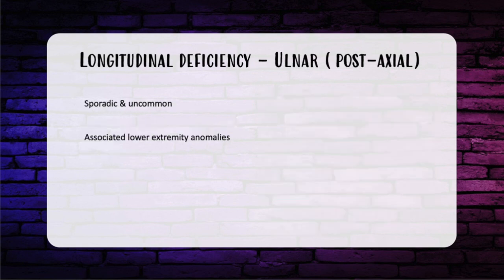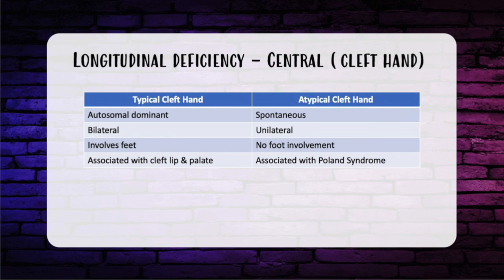Another type of longitudinal deficiency is ulnar deficiency, aka post-axial. This is sporadic and uncommon and is commonly seen with lower extremity anomalies. There's also central longitudinal deficiency, which results in a cleft hand. There are usually absent or deficient central digits. It's autosomal dominant with a deficit of the central AER. There's variable deficiency of the first web space, from narrowing to complete syndactyly, including possible fusion of the thumb to the index finger. Most patients, despite the aesthetic appearance, have pretty good functional outcomes.